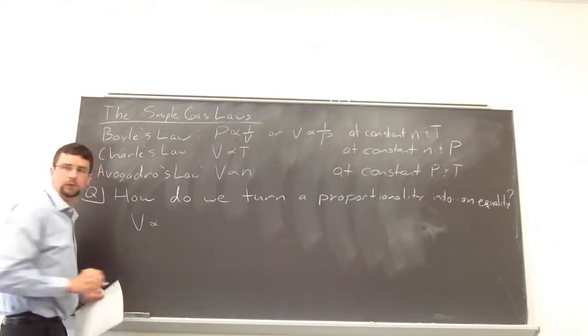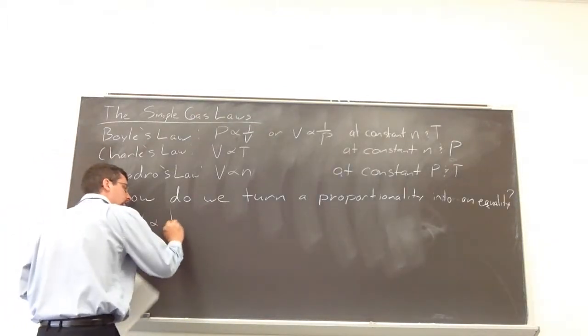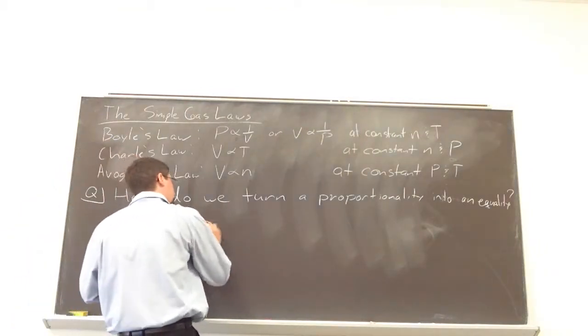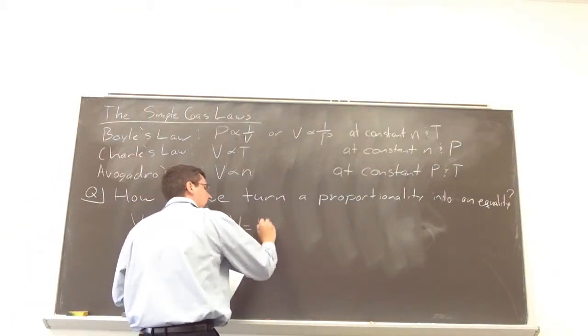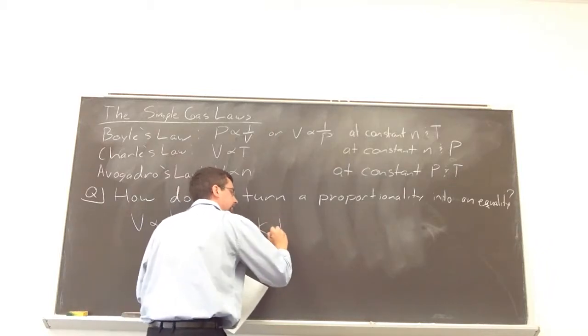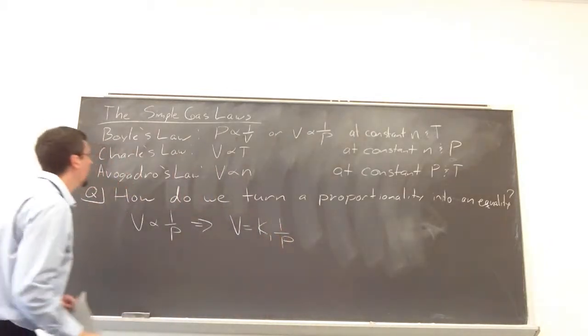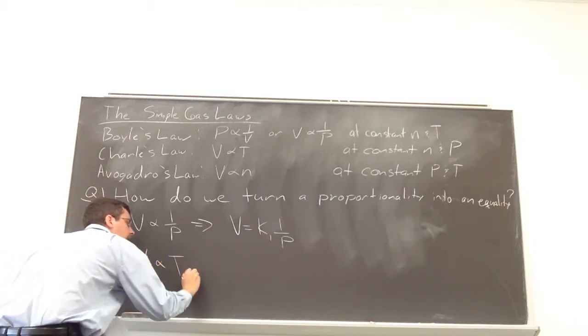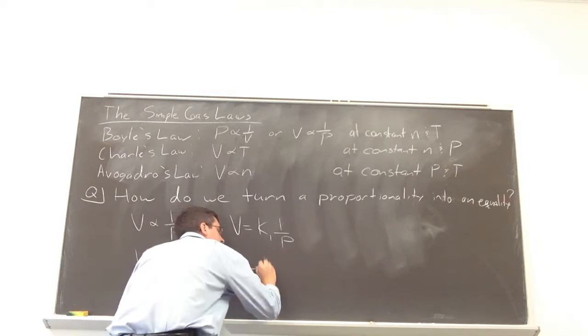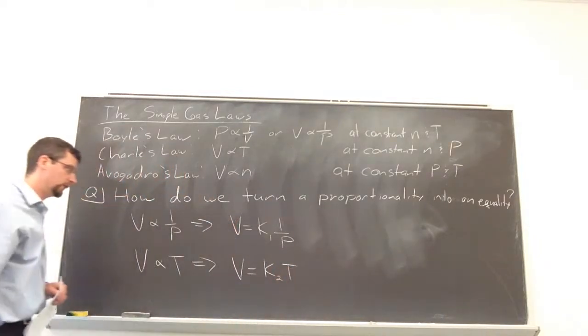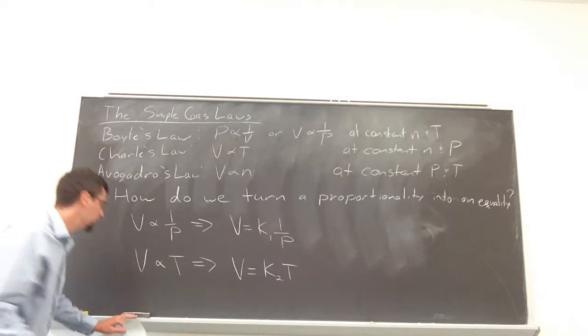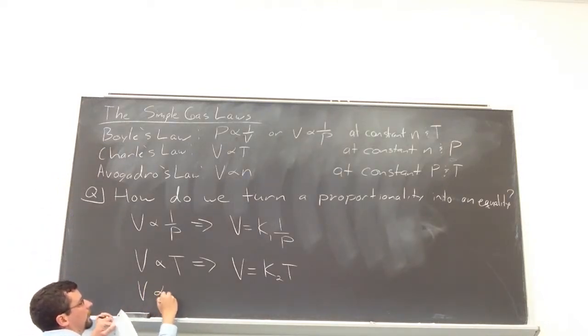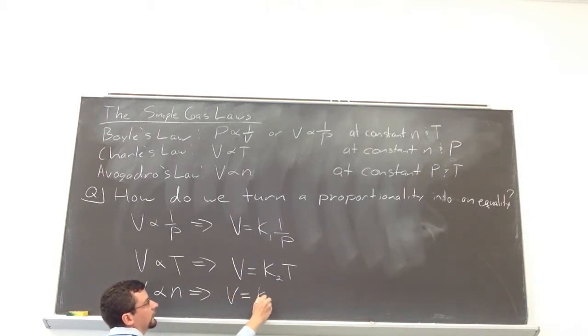So, for example, volume is related to the inverse of pressure. We can change that to an equality by just slapping in some constant. We're going to call this K sub 1. Our Charles' Law, we can group together. We can change it from a proportionality. We'll say volume is equal to K2 times T. So, they're related to one another. And then, finally, we can have Avogadro's Law, where we're switching from volume. We'll call this K3 to number of moles.